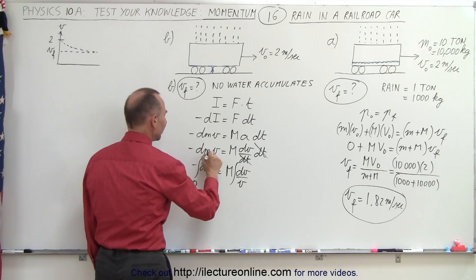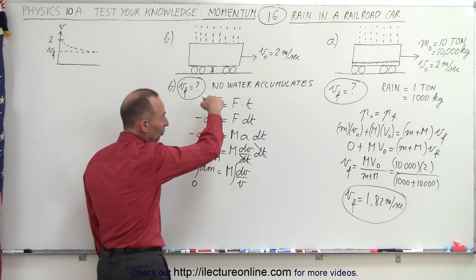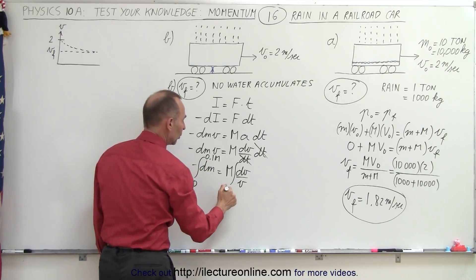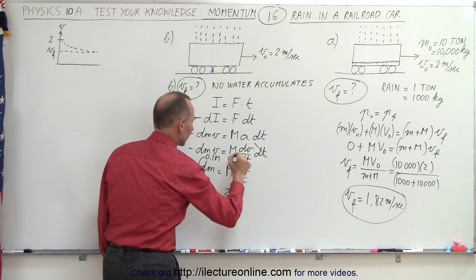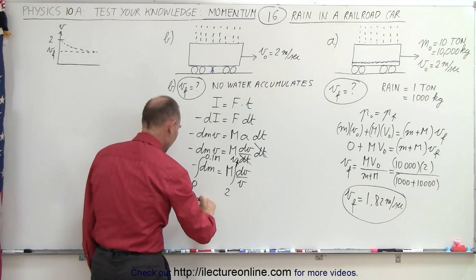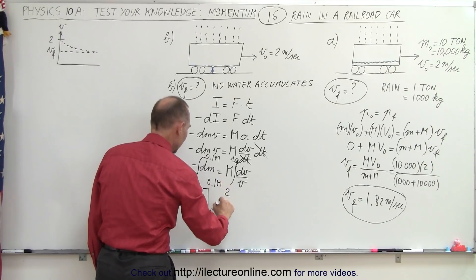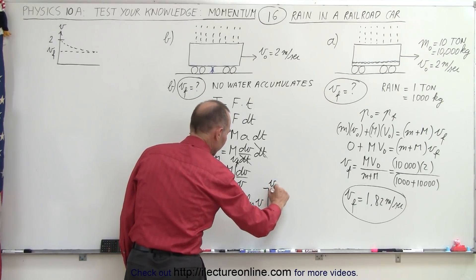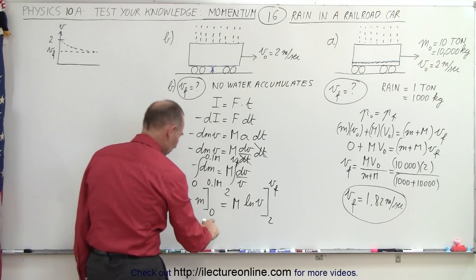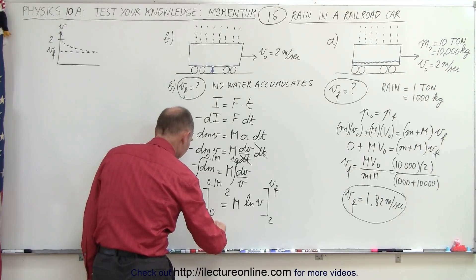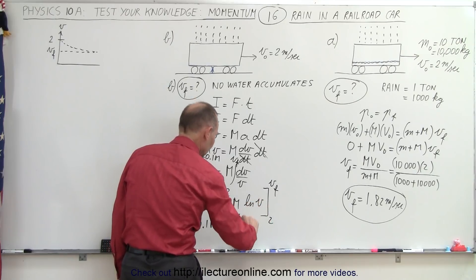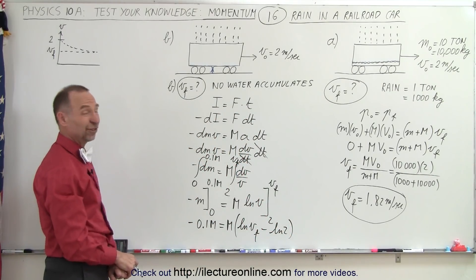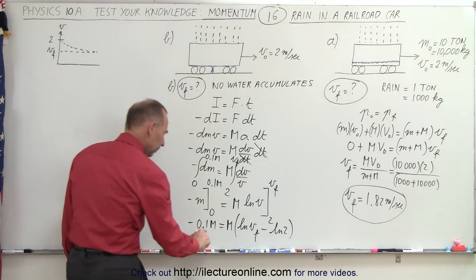Now we integrate both sides. The mass goes from 0 to 0.1M, since the rain is 1,000 kg and the car is 10,000 kg — one-tenth of the total mass. Velocity goes from v_initial = 2 to v_final. Integrating gives: minus m evaluated from 0 to 0.1M equals M times the natural log of v evaluated from 2 to v_final. Substituting limits: minus 0.1M equals M times (ln(v_final) minus ln(2)).